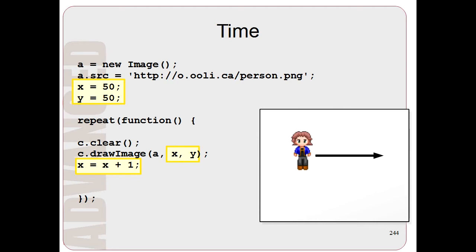But because we only change x, the person stays at the same position vertically but moves horizontally across the screen.